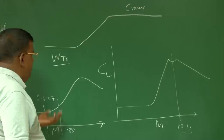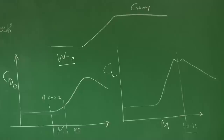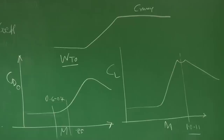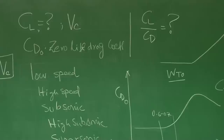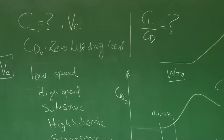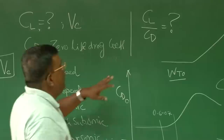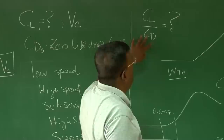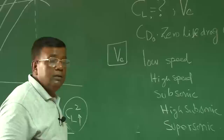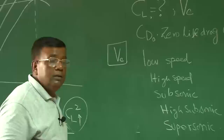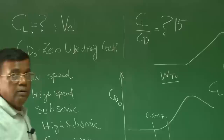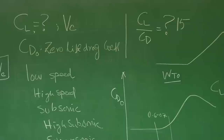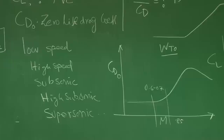Depending on which speed or Mach number you are designing your airplane, you have to be very careful about the type of CL and CD you will be generating. Ultimately you are looking at the CL/CD ratio you are flying. For a designer, if aerodynamic analysis says CL/CD should be 15 for efficient performance, the designer must ensure that by arranging the wing, tail, and fuselage such that the pilot can generate CL/CD as and when required.